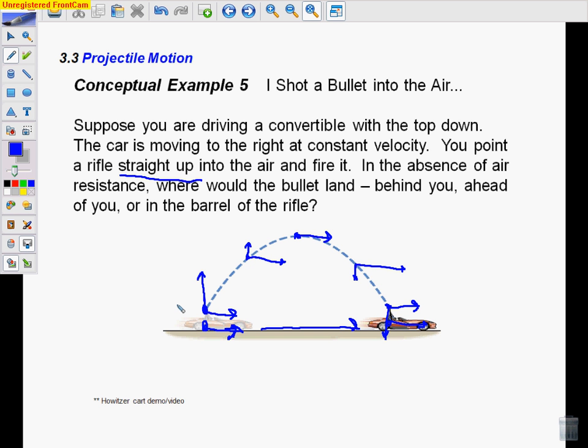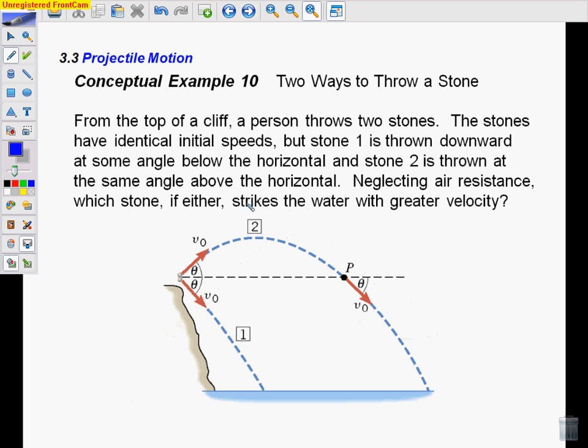there's no way that air resistance is actually negligible. So the bullet would definitely not land back in the rifle. However, if you slow this down, you can demonstrate this. And I have a demonstration that I'm going to show you in class that is similar to this. We'll see that tomorrow.